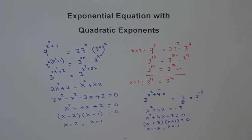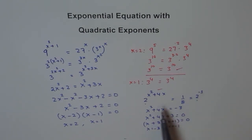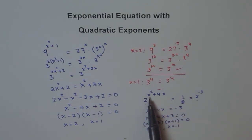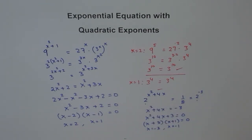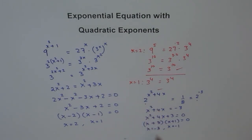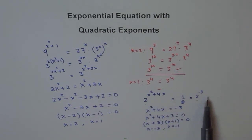Check both answers. For x equals minus 1: minus 1 squared is 1, and 4 times minus 1 is minus 4; 1 minus 4 equals minus 3. It works. For x equals minus 3: minus 3 squared is 9, and 4 times minus 3 is minus 12; 9 minus 12 equals minus 3. It also works. So both are valid solutions.